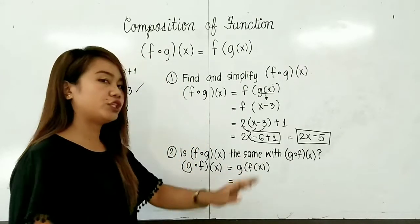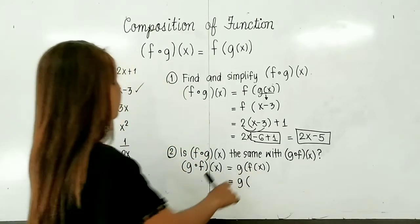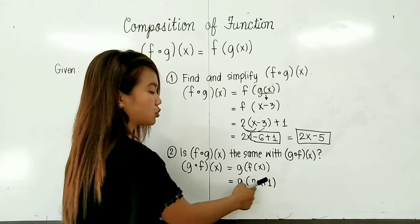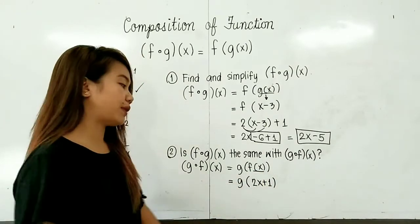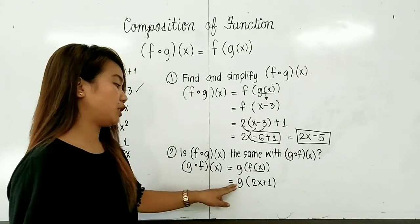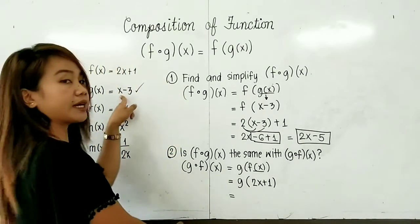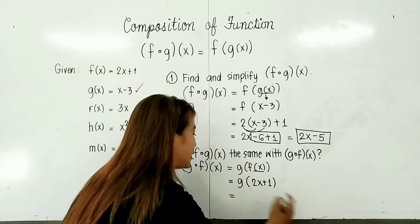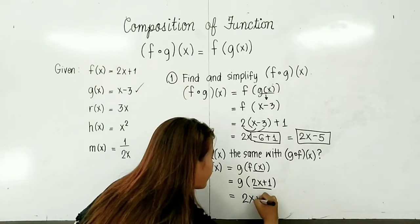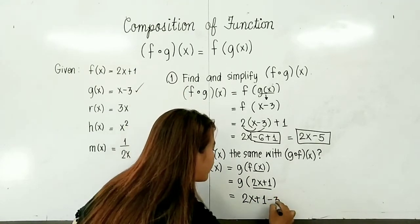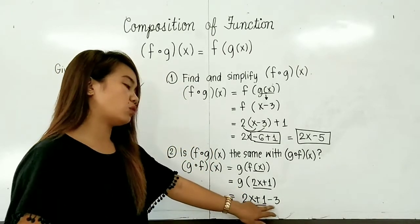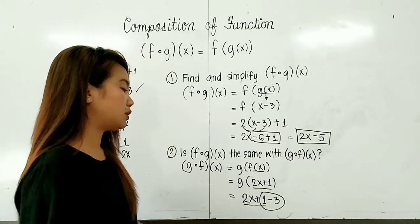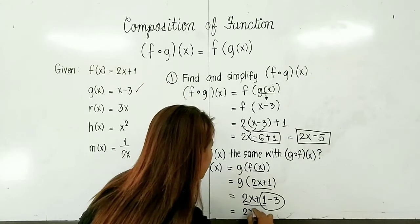g composed of f of x equals g of f of x. We will put f of x into the function g of x. Our f of x is 2x plus 1, so we substitute 2x plus 1. This means all the x variables in g will become 2x plus 1. Our g of x is x minus 3, so the x becomes 2x plus 1, giving us quantity 2x plus 1, minus 3. We then combine the constants: 1 minus 3 equals negative 2. Therefore, our final answer is 2x minus 2.